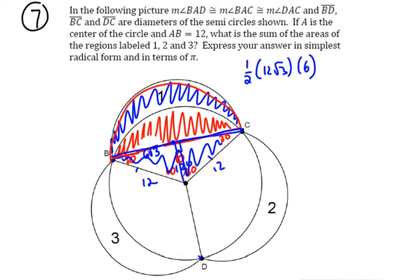But 6 root 3 also turns out to be the radius of our semicircle, right? This is the center of the semicircle, and so 6 root 3 is going to be the radius. So when we go find the area of the semicircle, we're going to use 6 root 3.